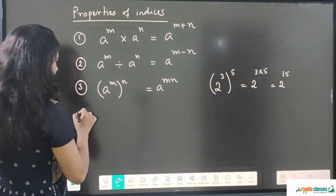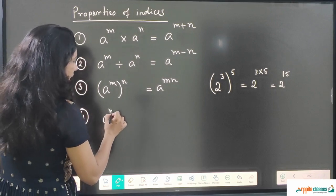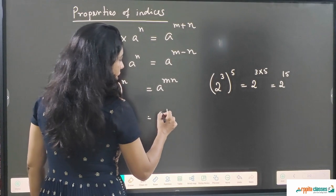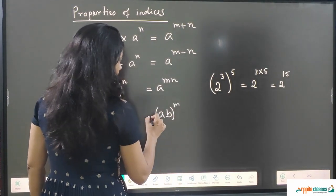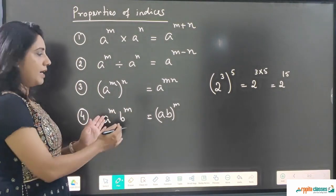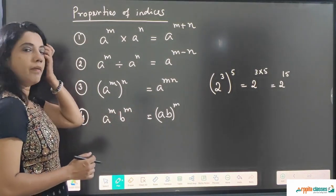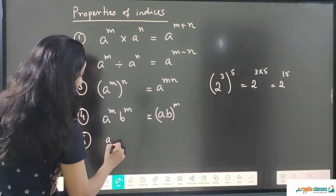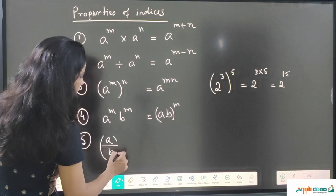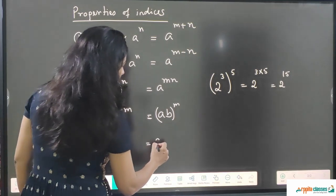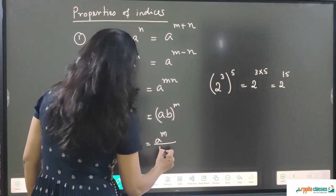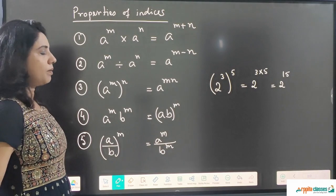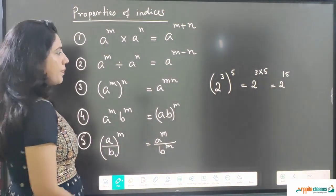The fourth property is: if it is a to the power m and b to the power m, we can write it as (ab) whole to the power m. If the powers are the same, we can combine the bases. The fifth property is: if it is (a/b) whole to the power m, we can separate it as a to the power m upon b to the power m.